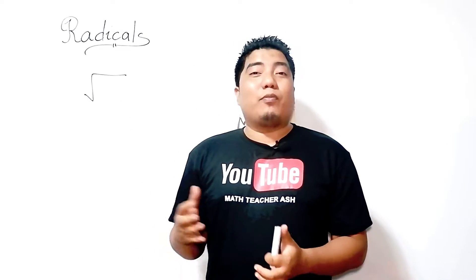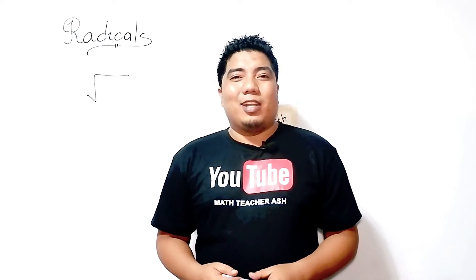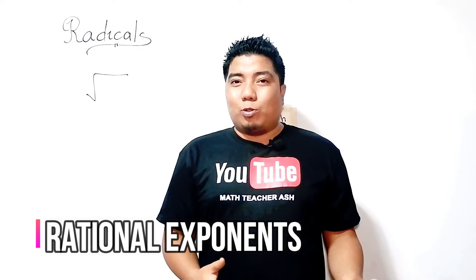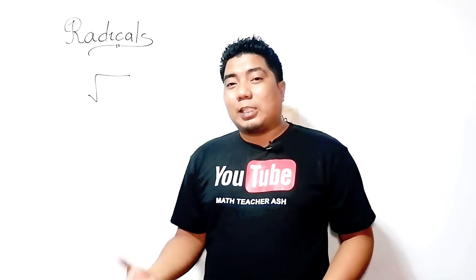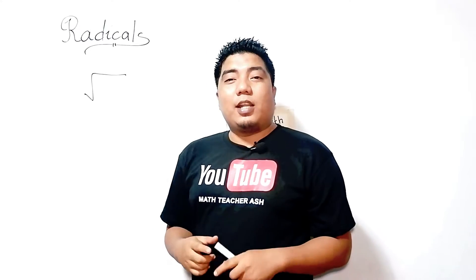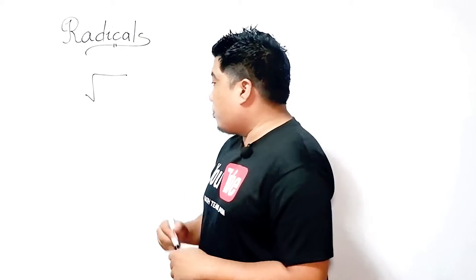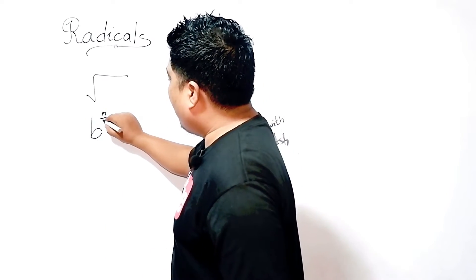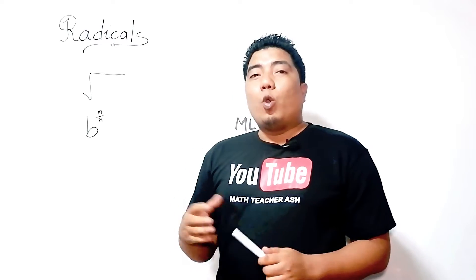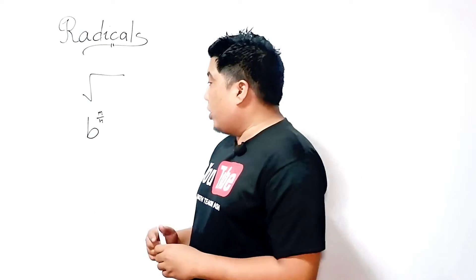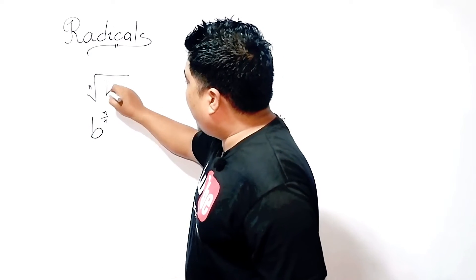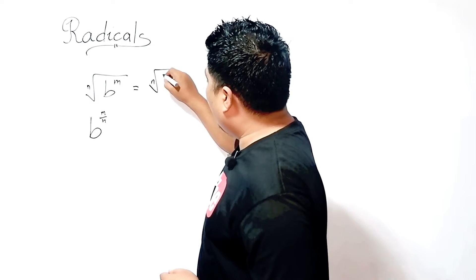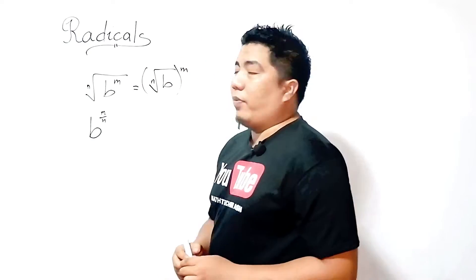This concept is converted from our last discussion on rational exponents, in which rational exponents can be introduced or converted in the form of a radical expression. If you can still remember the concept of the rational exponent — if we have b as our base and its exponent is given in the form m over n — then we can convert this expression into the nth root of b to the power of m.